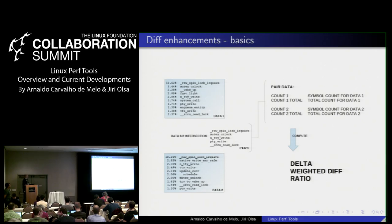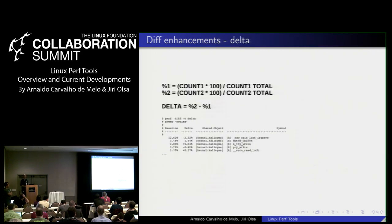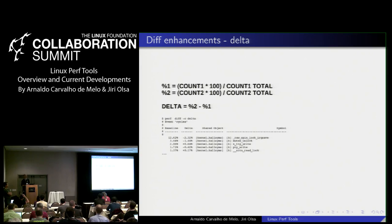Here are the basics of how diff works: with two data files, you take the intersection of symbols present in both, which gives you a set of symbols you can actually compare. You have counts for those symbols and then perform the computation. The current method is delta: you compute the percentage of a symbol in each data file and subtract the two values. The '-c delta' option lets you specify which computation to use.